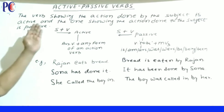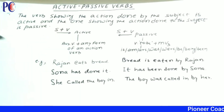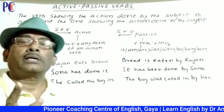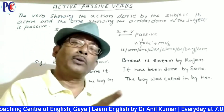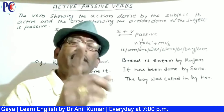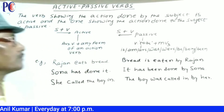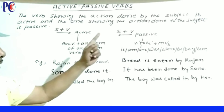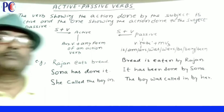The verb showing the action done by the subject is active. And the one showing the action done to the subject is passive.